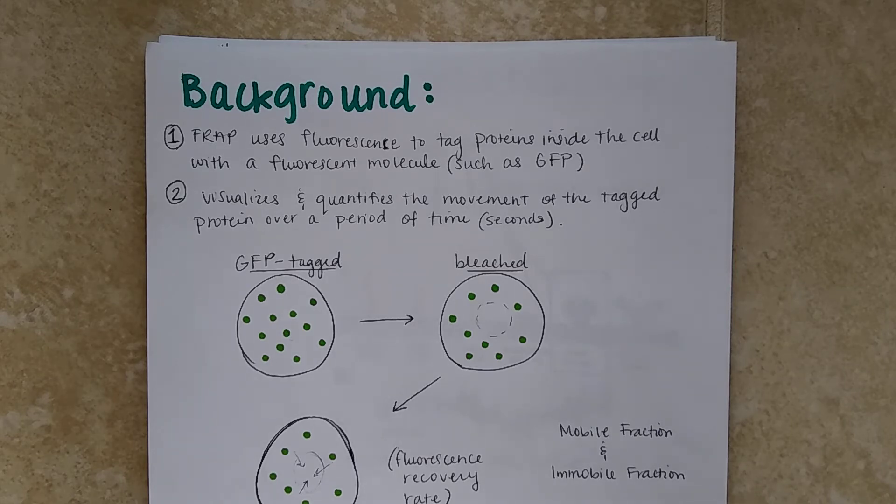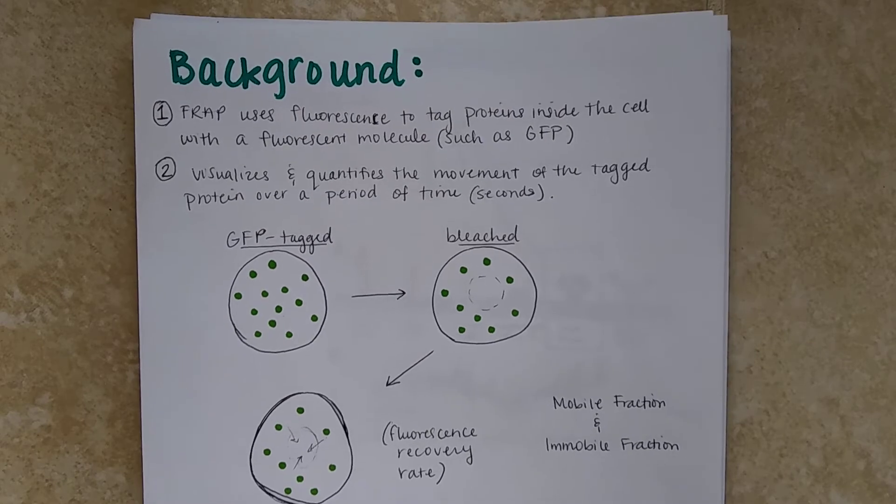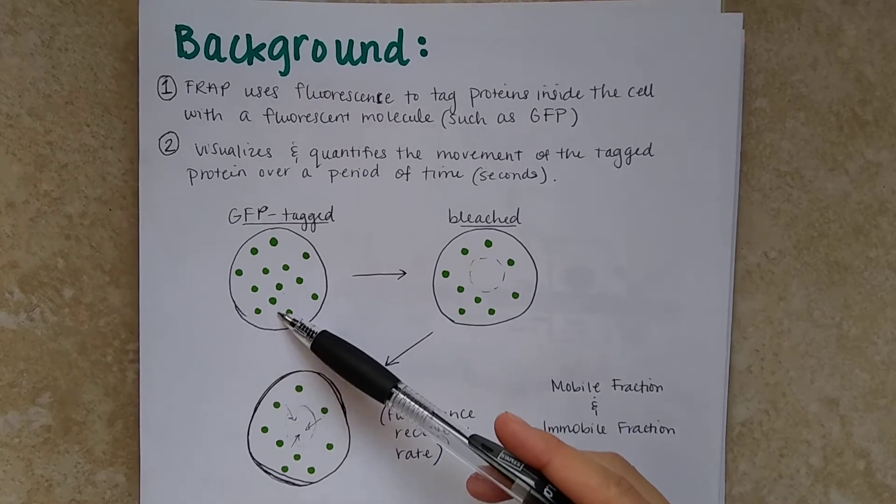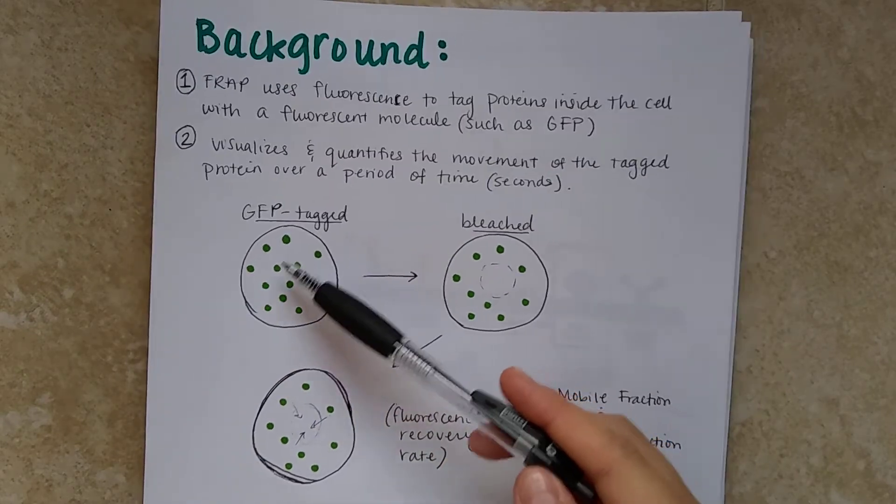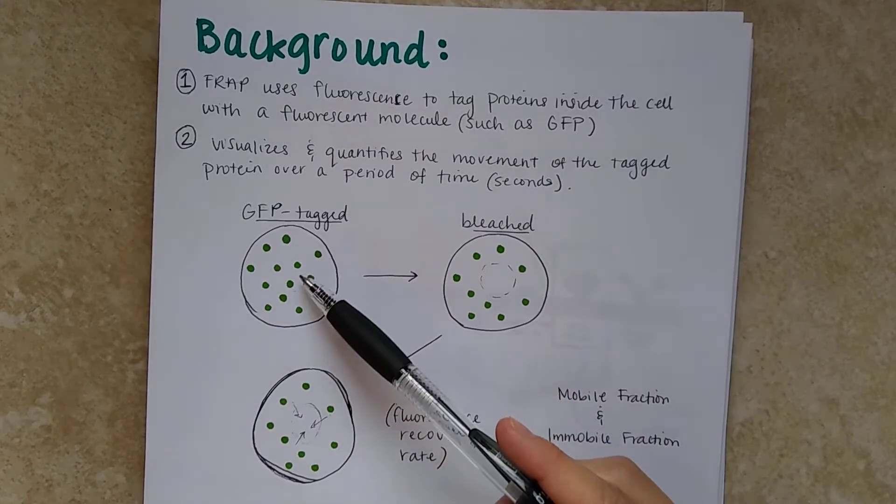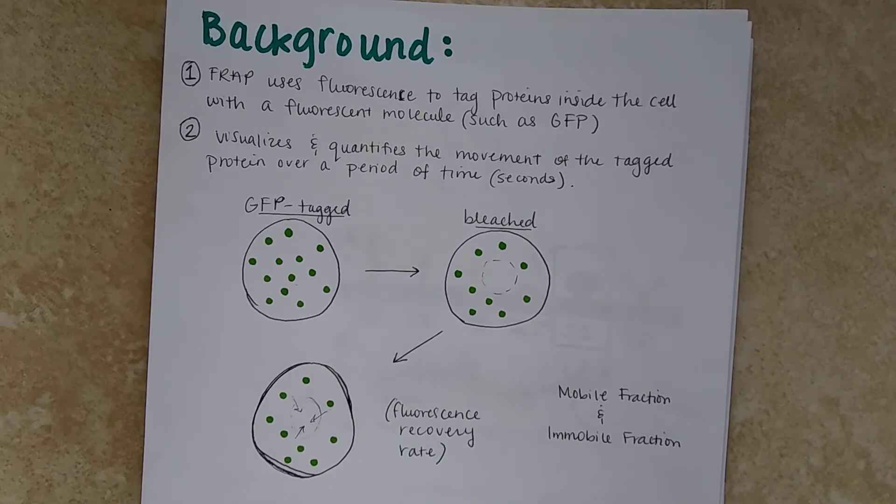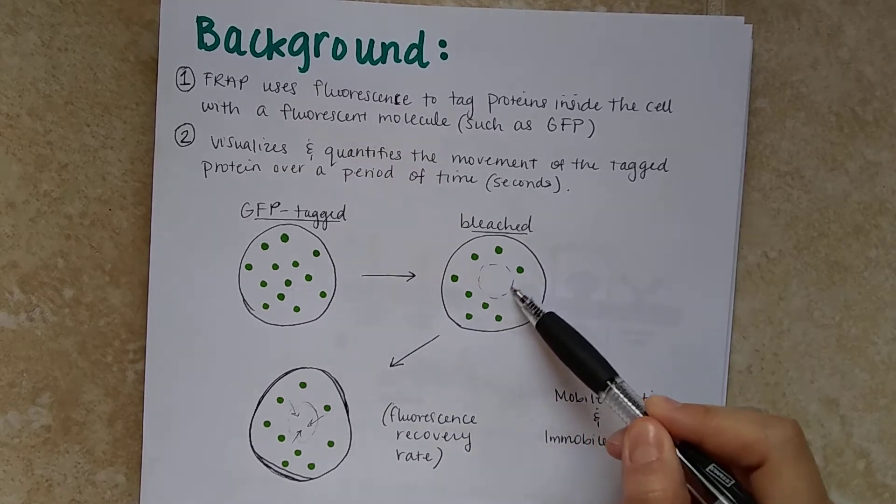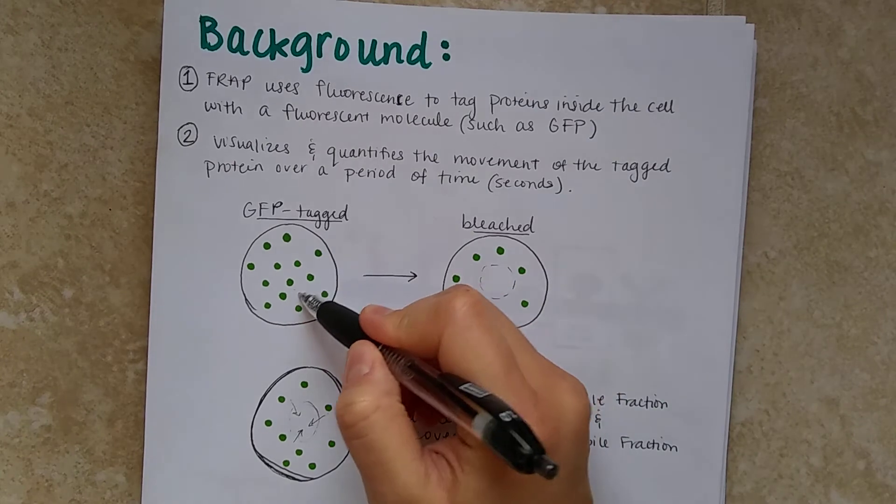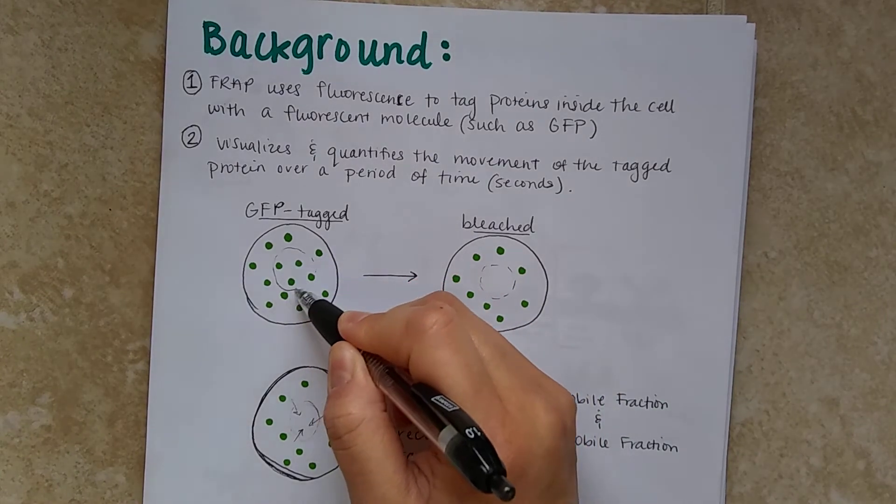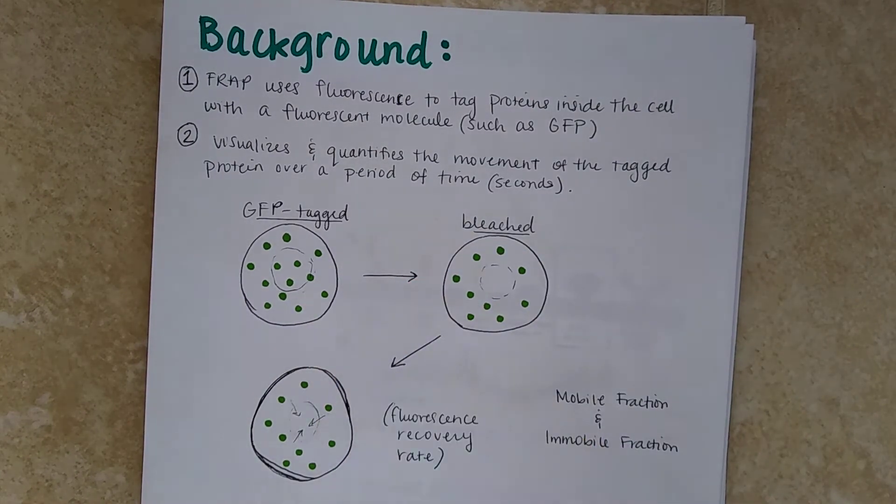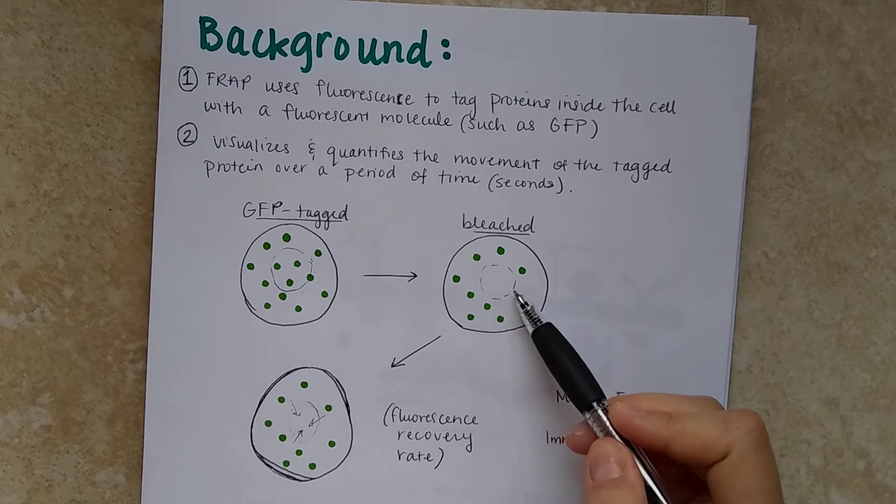So here we can see GFP-tagged proteins and molecules inside the cell, and we can see that by the fluorescence indicated in the green. So whenever it is bleached, it is using a high-intensity laser, and we're going to be looking at a region of interest. So once it is bleached, we will not see any fluorescence.